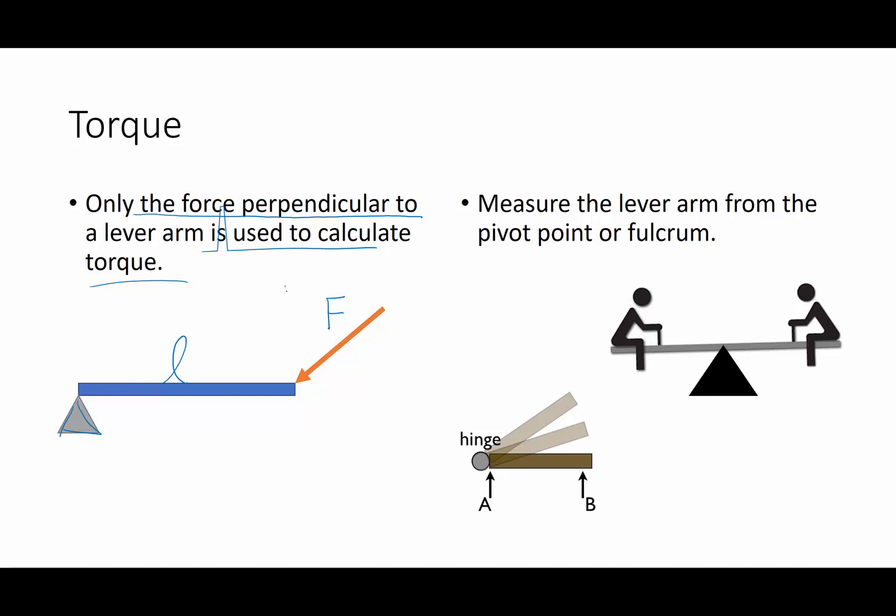I only want the component of the force that is perpendicular, a 90 degree angle, to that lever arm. That's the only part or fraction of that force that's used to actually calculate torque. So it's going to be the force that's perpendicular to that lever arm is what we use to calculate.